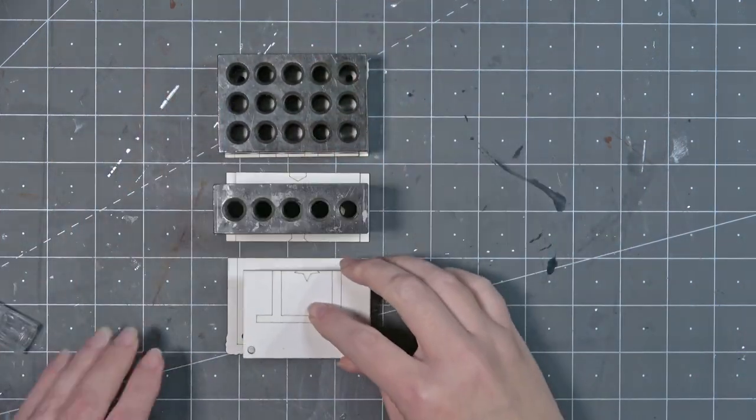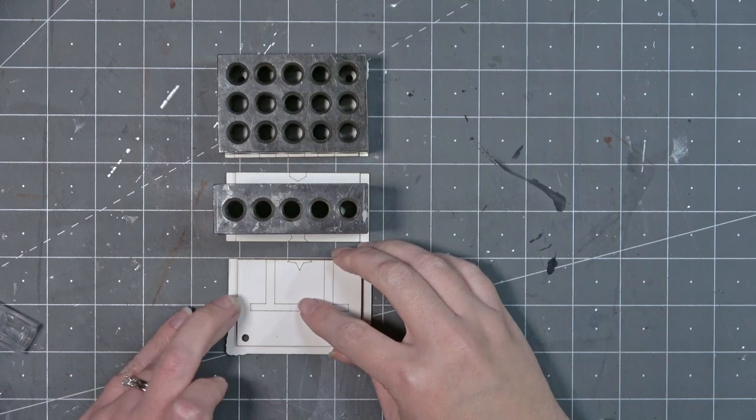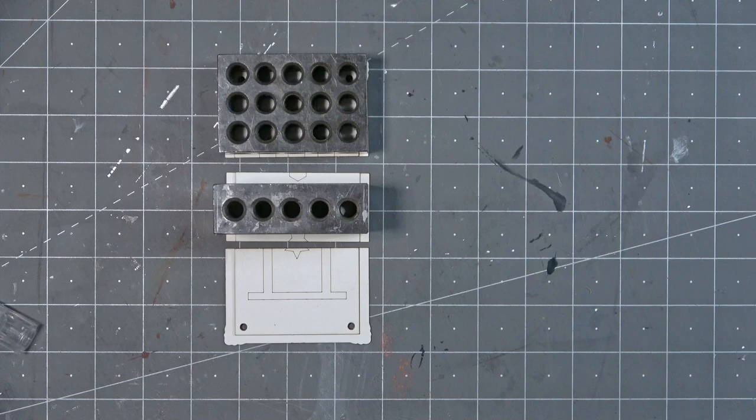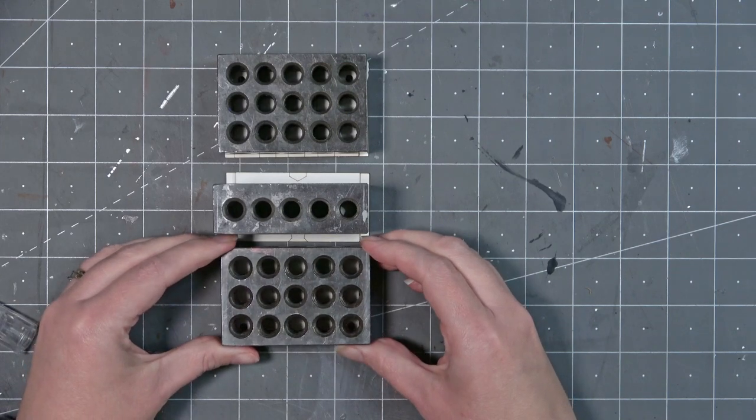It's a good idea to put them underneath something heavy while they're drying. You're going to do the same thing for the pieces marked with the number 2 and the pieces marked with a number 3.